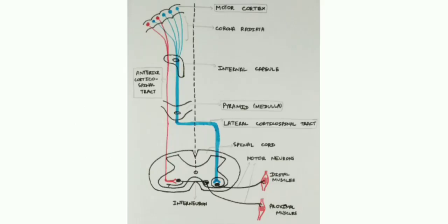In this picture, the dotted line in the middle shows the midline of the body. At the top you can see the motor cortex, with blue and red fibers arising from it. These fibers radiate in a pattern known as the corona radiata, then descend through the internal capsule, and from there reach the medullary pyramid. The blue fibers decussate — crossing to the opposite side — and descend as the lateral corticospinal tract, whereas the red fibers do not cross the midline and descend ipsilaterally to reach the spinal cord.